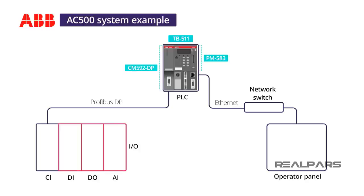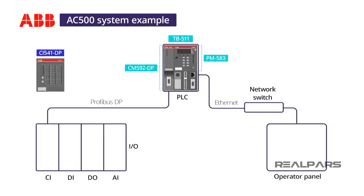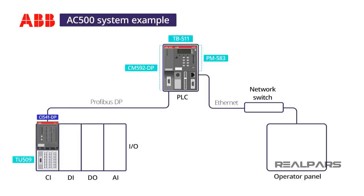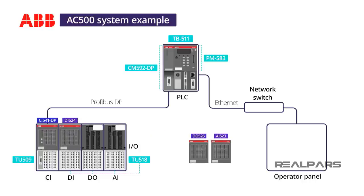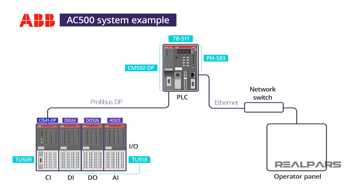To support the three I/O cards in a remote configuration, I first need a Profibus interface card in the I/O panel to communicate with the CM592DP card on the CPU terminal base. I select a CI541DP Profibus card and a TU509 terminal unibase. I will need three TU518 I/O bases: one for a single DI524 32-point 24V DC digital input card, one for a DO526 8-point 24V DC digital output card, and one for an AI523 16-point analog input card.